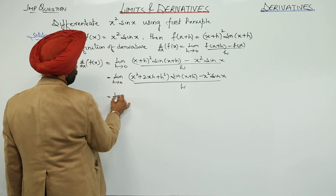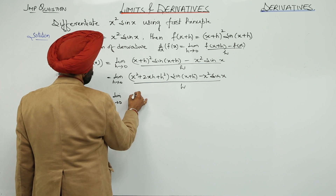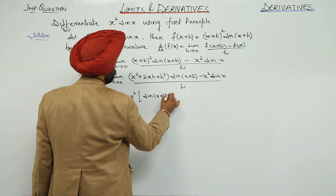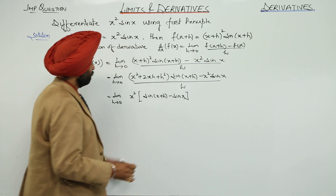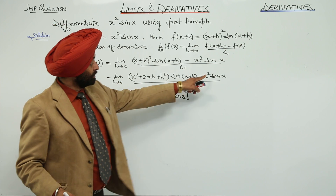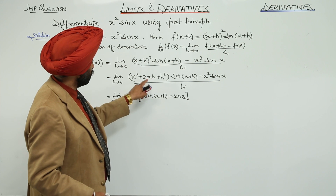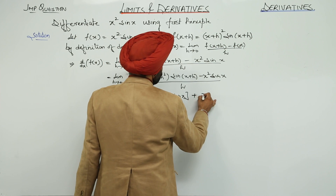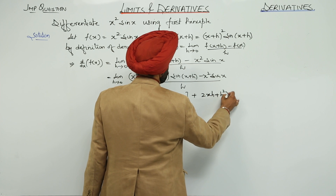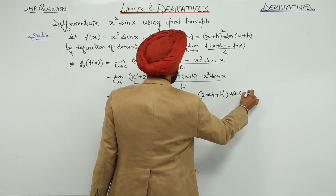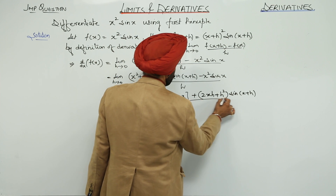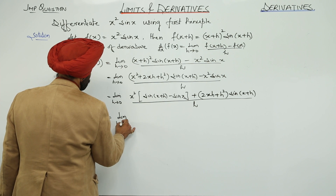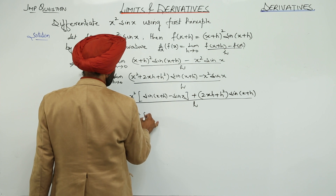Further, we group the terms: limit h approaches to 0, x² [sin(x + h) - sin x]. What I have done here is multiplied x² with sin(x + h), and x² sin x is already there. So x² is taken common from the first and last terms, plus we are left with 2xh + h² with sin(x + h), upon h.